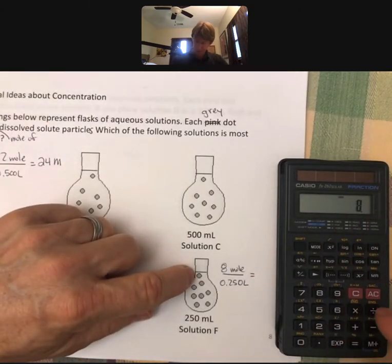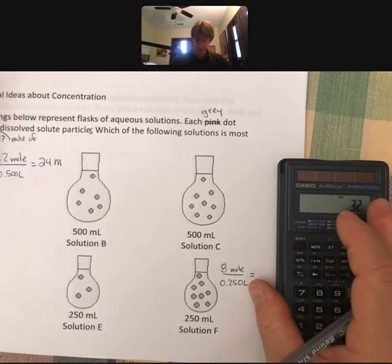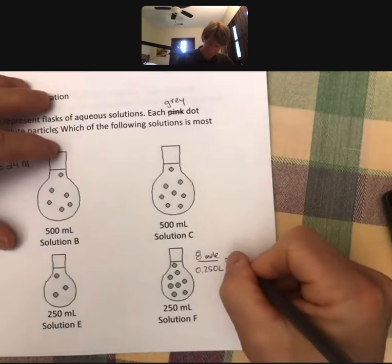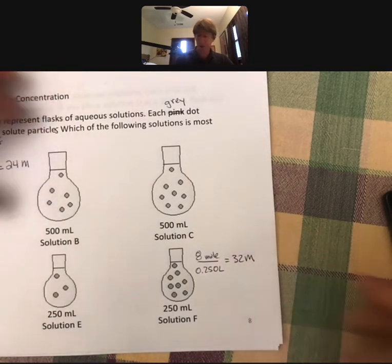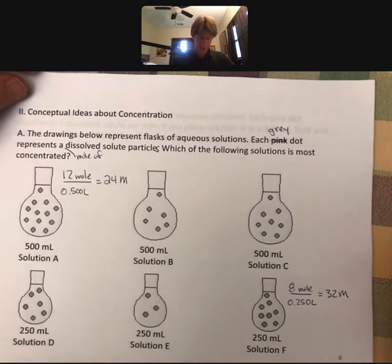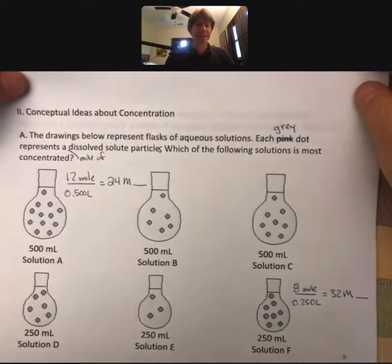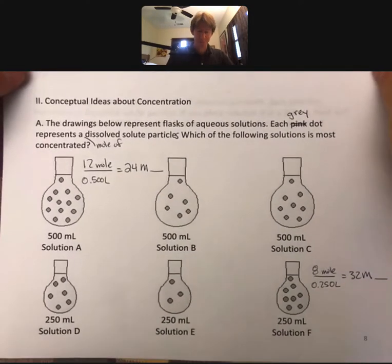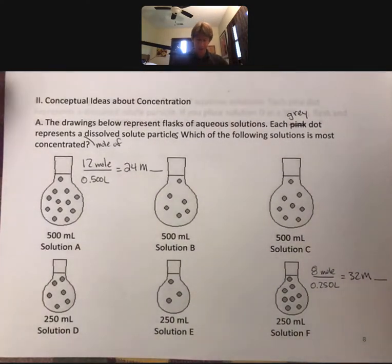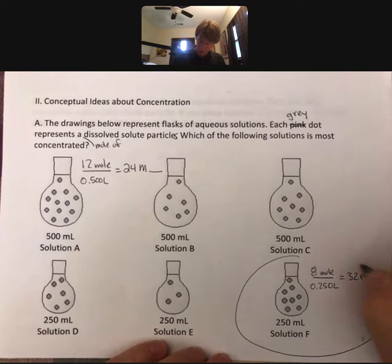8 divided by 0.25 - yeah, 32 molarity of whatever these solutes are. It's a little weird for me because I'm used to seeing something written right there, but this is conceptual ideas, so I'm bearing with it. So first of all, this is the most concentrated one because you can see it's got the highest molarity.